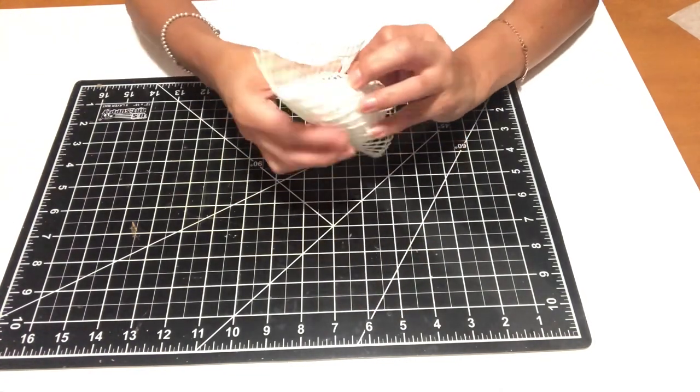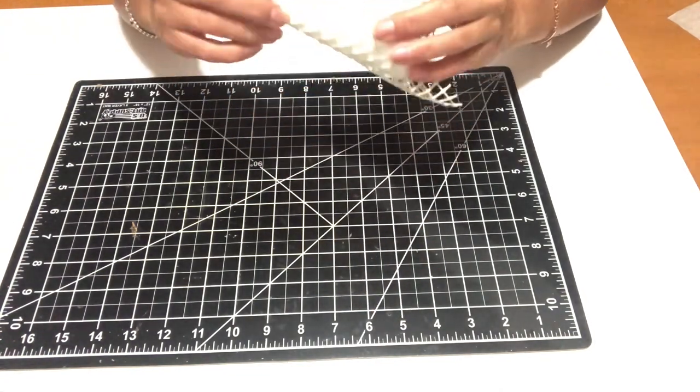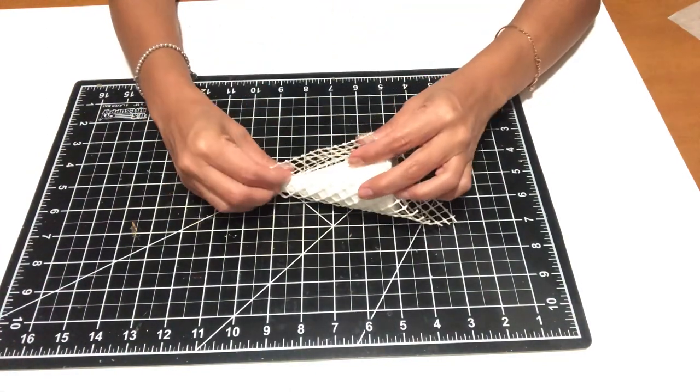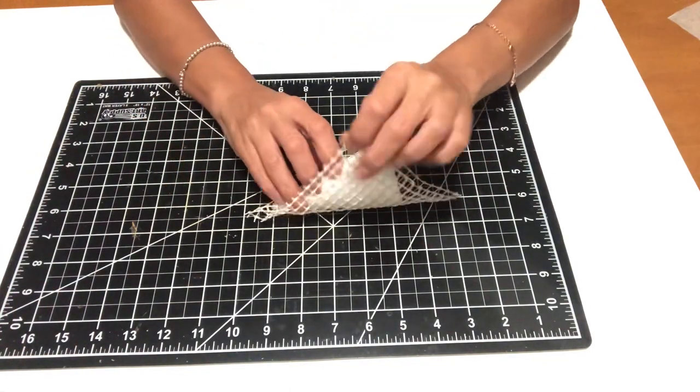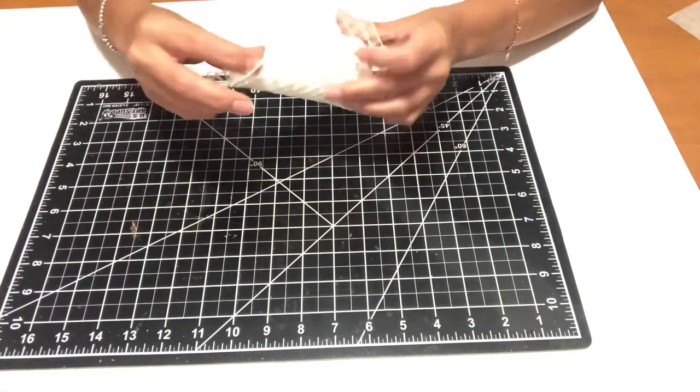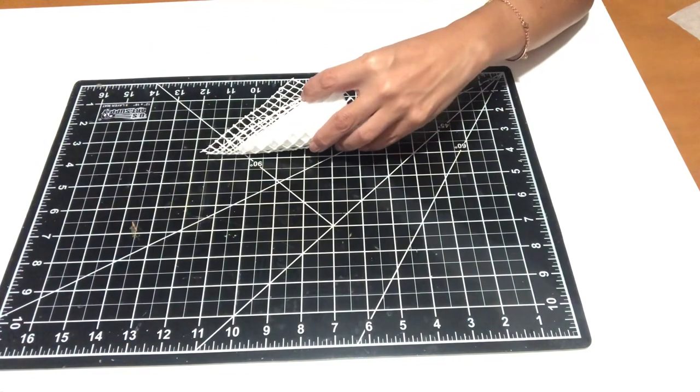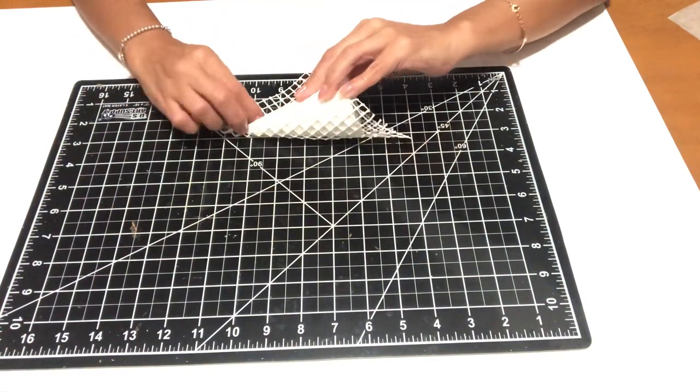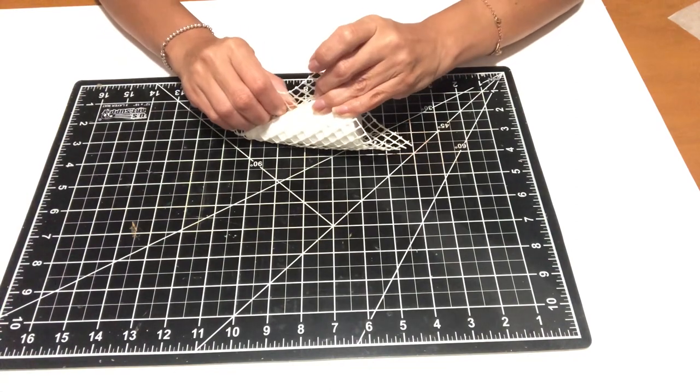The first thing I did was measure my cone and wrap it around. As you can see here, I went in with my scissors and cut off the excess, whatever I thought I wasn't going to need. I did leave about half an inch just to make sure, and once I added the glue, whatever was left I just went ahead and cut that off too.